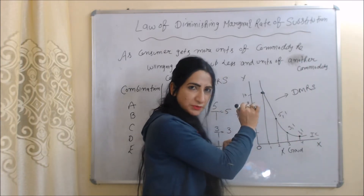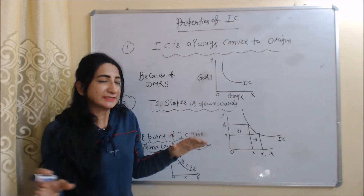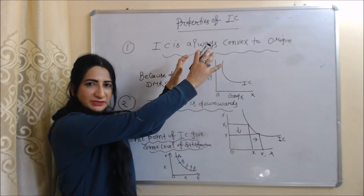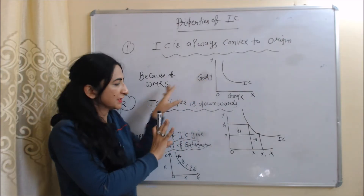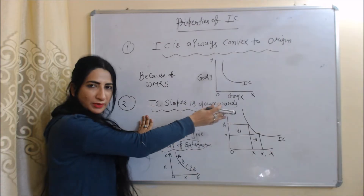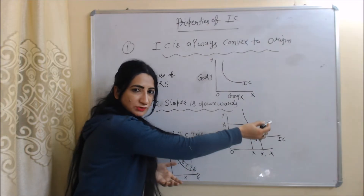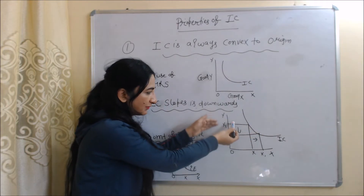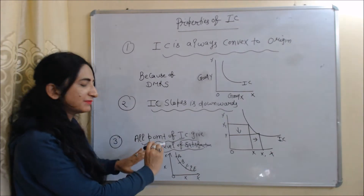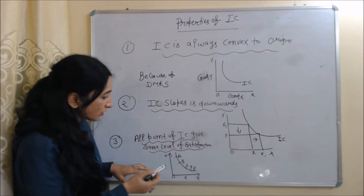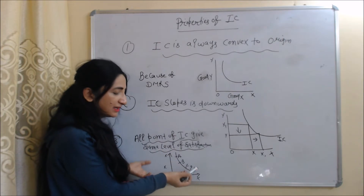Now we will discuss the properties of indifference curve. The first property is that an indifference curve is always convex to the origin, because of the diminishing marginal rate of substitution. The second property is that an indifference curve always has a downward slope, because in order to gain one commodity we have to incur the loss of the other. The third property is that all points on an indifference curve give the same level of satisfaction — a consumer can buy any combination A, B, C, D, or E and get the same satisfaction.